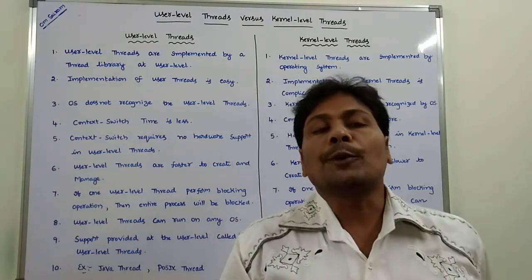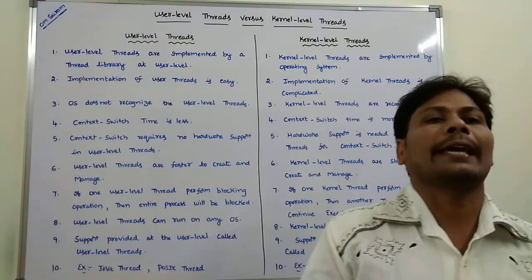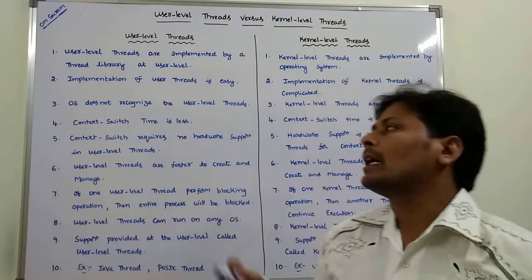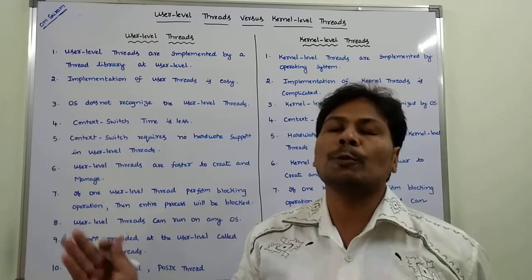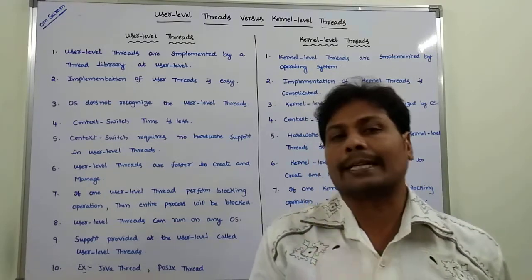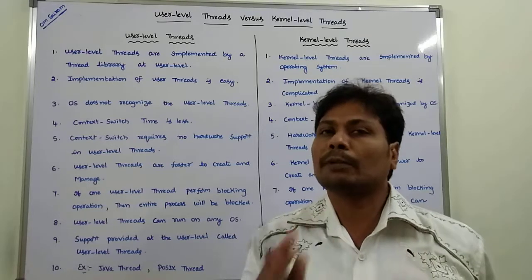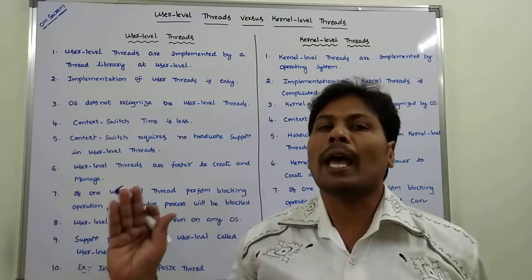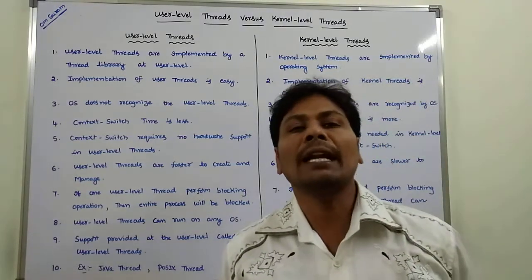In the case of user-level threads, context switching takes very less time. But in the case of kernel-level threads, context switching takes more time. Context switching means switching from one user-level thread to another user-level thread, which takes very less time for user-level threads, while switching between kernel-level threads takes more time.